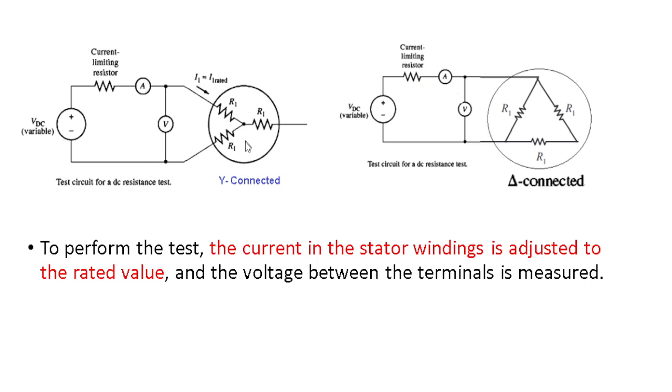To find R1, the stator winding may be Y-connected or delta-connected. To perform the test, the current in the stator winding is adjusted to the rated value using a variable DC source and variable resistor.